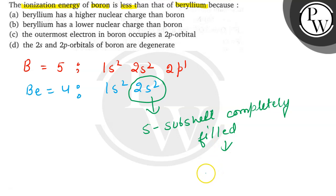which gives extra stability. Whereas, there is one electron in the p orbital in boron, so it can be removed easily.